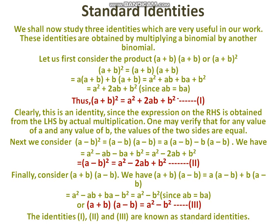In the same way, (a minus b) whole square is equal to a squared minus 2ab plus b squared. In the same way, (a plus b) into (a minus b) is equal to a squared minus b squared. These are identities 1, 2, and 3.